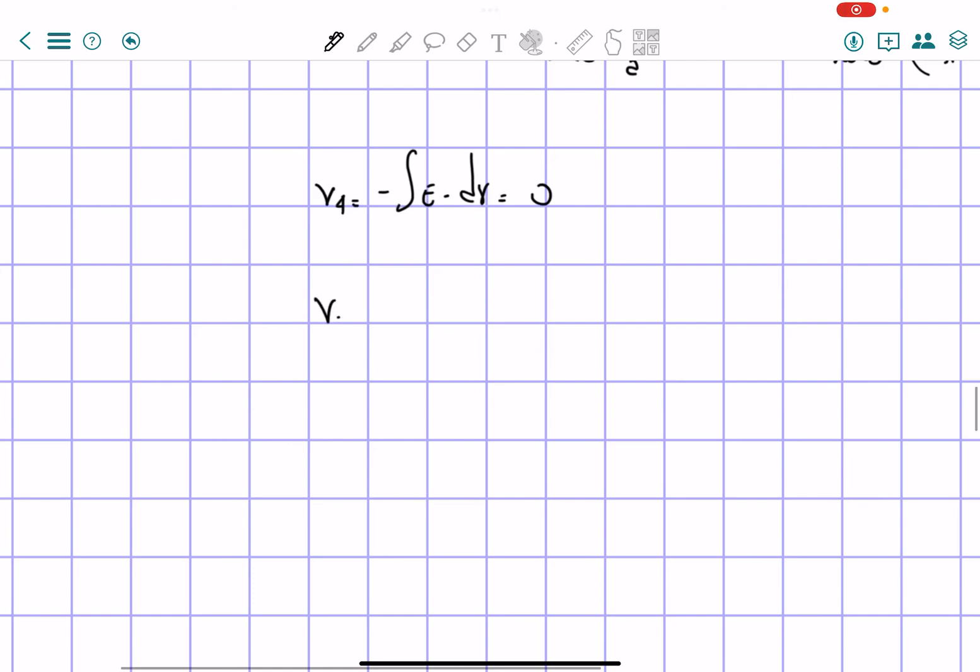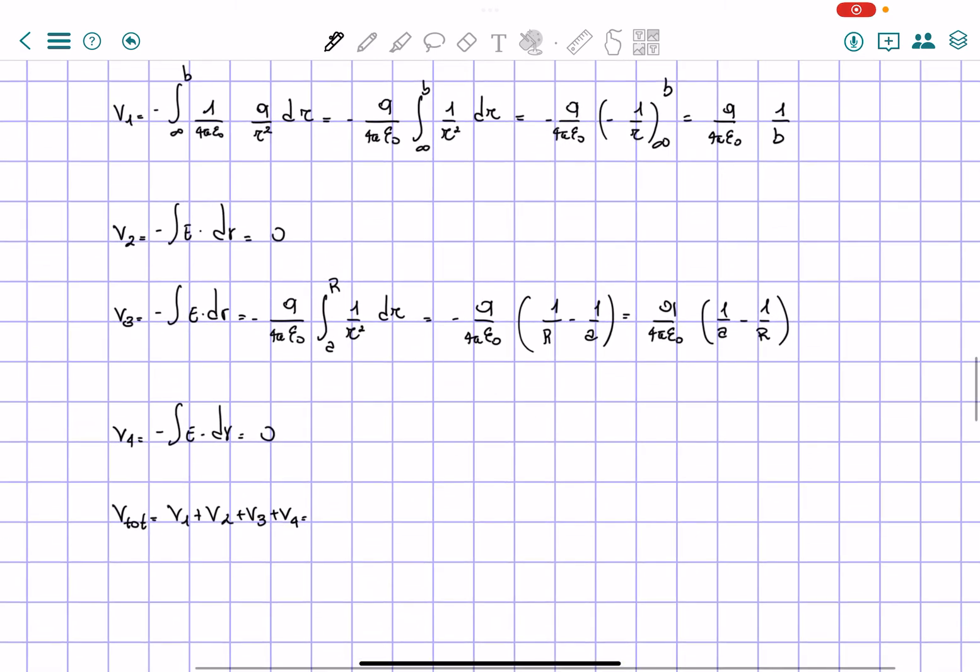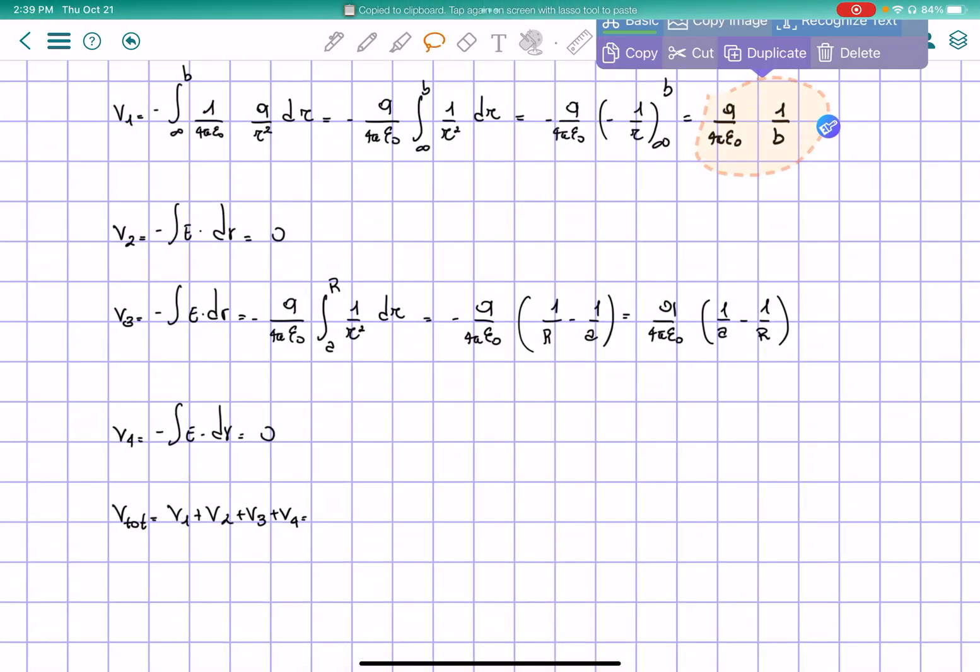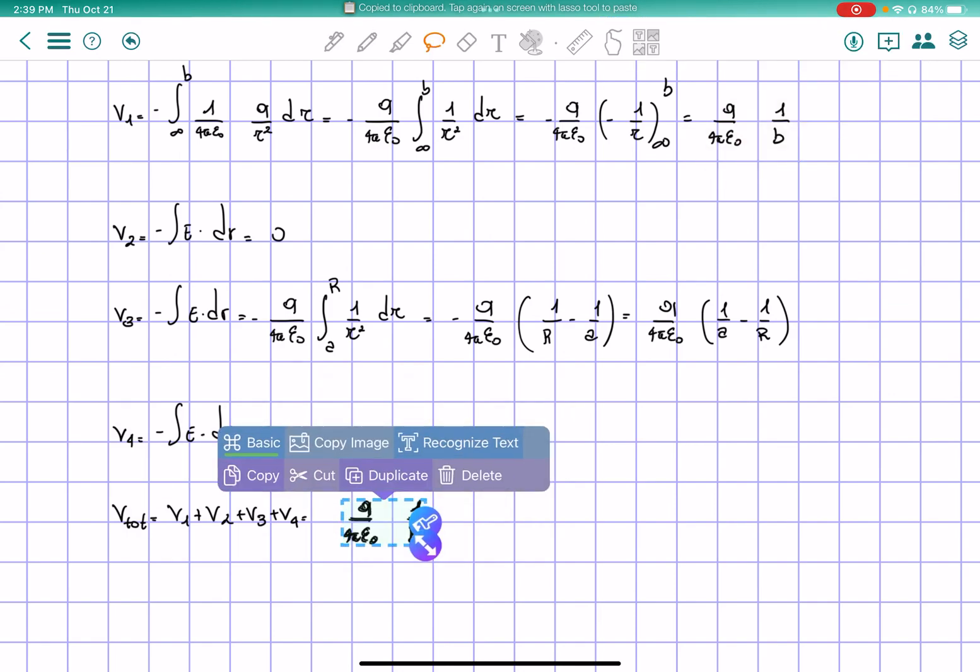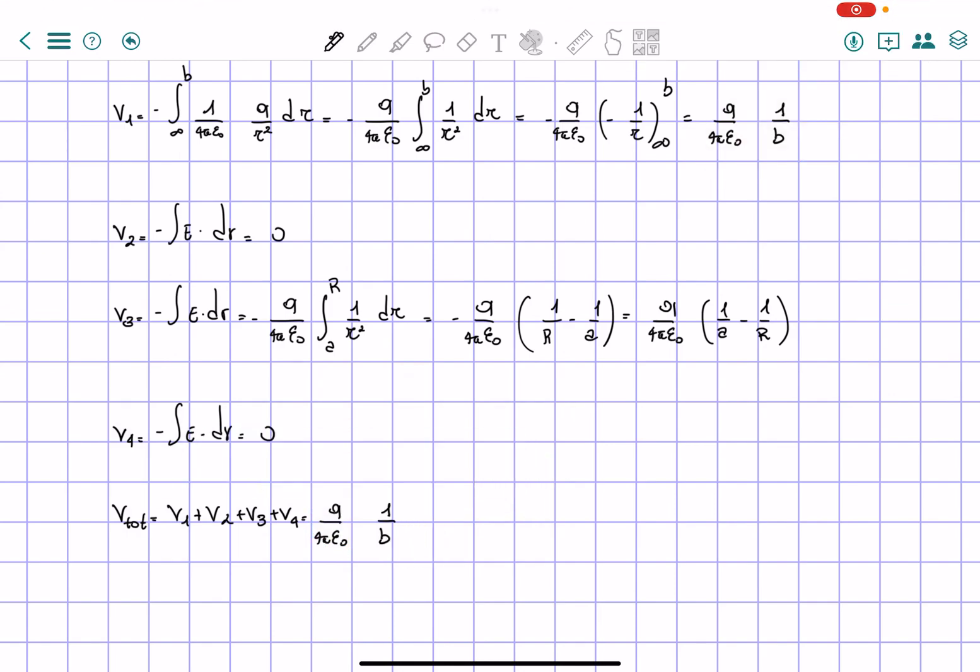So the total voltage will be equals to v1 potential plus v2 plus v3 plus v4. V4 is equal to 0.